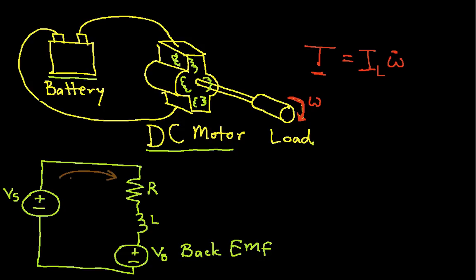So we're going to start by writing the current that flows around this loop. This is a single loop circuit. And so the current that flows through R is the same as the current that flows through L is the same as the current that flows through the back EMF source as well as the battery. So we're going to describe this current. We're going to label it.